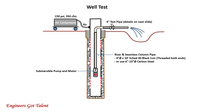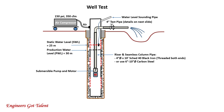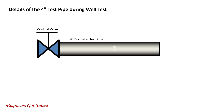The water is then discharged at the mud pit. A water level sounding pipe is installed to determine the static water level (SWL), which is the water level when the pump is turned off, found to be 25 meters. When the pump is turned on, the water level decreases to a level called production water level (PWL), which is 30 meters. The difference between PWL and SWL is called drawdown.